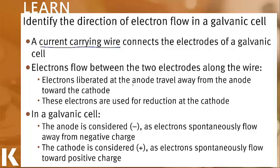Electrons are liberated at the anode. Liberated means that they're being released, so this is where oxidation is occurring. Once they are liberated, they can travel away from the anode toward the cathode. Once the electrons reach the cathode, they will be used for reduction at the cathode.